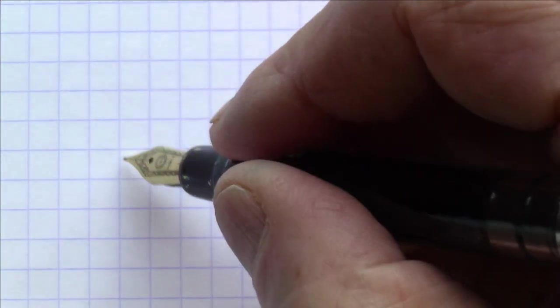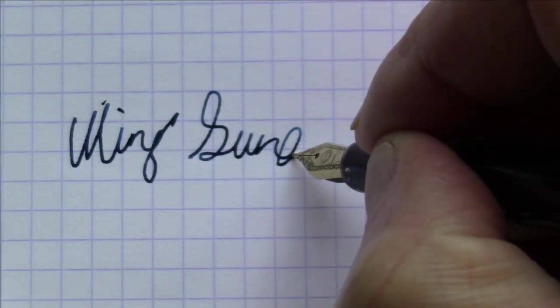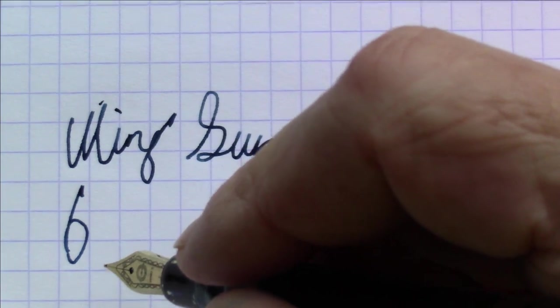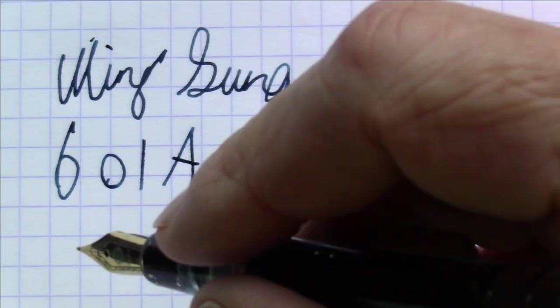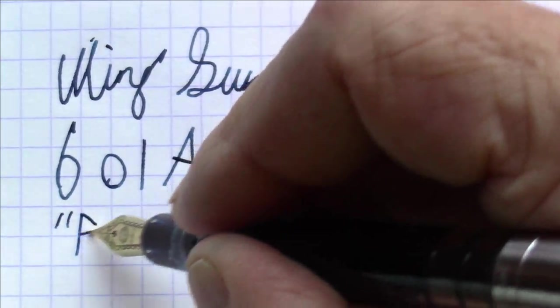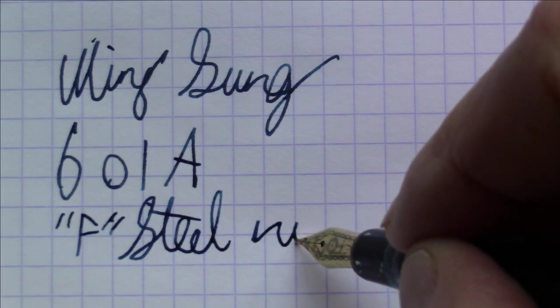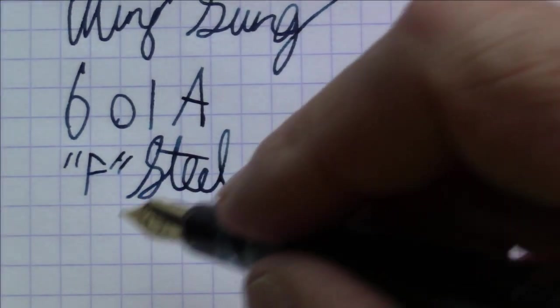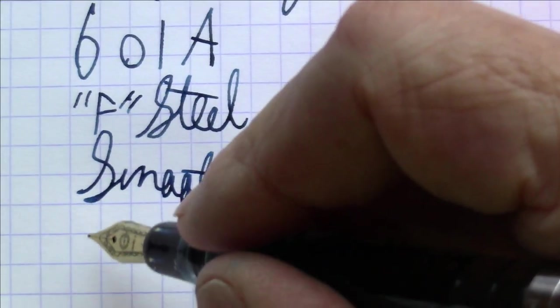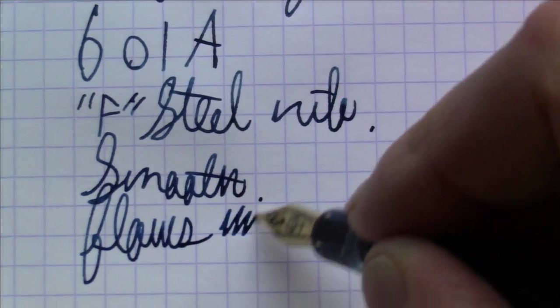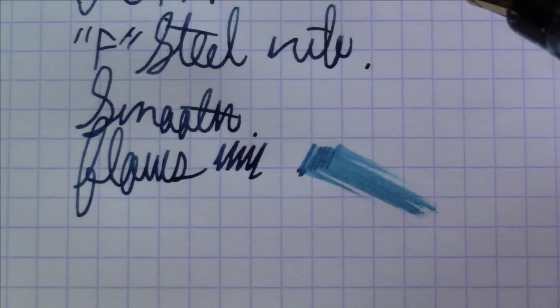Okay, folks, what we're writing with here today is a Wingsung model 601A. And this is a fine steel nib. And I'm very happy with this nib. So this is smooth. It has a very nice flow. Very nice. I'd say wetness is slightly above average, but pretty nice. Very pleased with the way this writes.